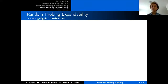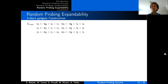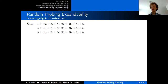In our work, we are able to instantiate the expansion strategy with three-share gadget constructions that we show are random probing expandable. Here is a construction of a three-share copy gadget that outputs two fresh copies v and w of the variable x. For each of the copies, we use three random values that are added twice to each output in a circular order. For example, for the first output, we add r0, r1, and r2 to the three output shares, and then add r1, r2, r0. This way, the output shares are randomized, their combination gives the original value x, and the same holds for the second output.